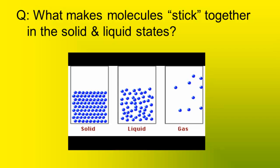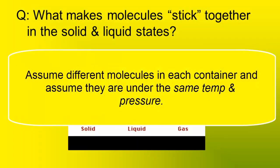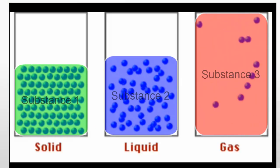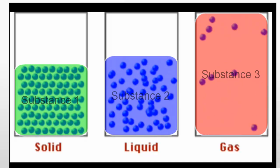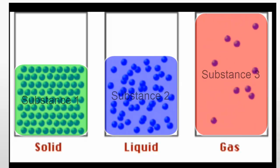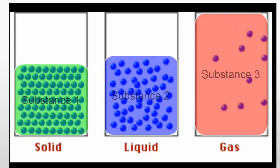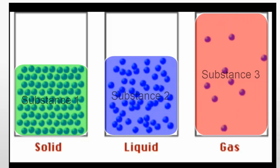In this video I'd like to address this question: what makes molecules stick together in the liquid and solid states? In this animation we can clearly see that molecules, represented by the blue dots, stick pretty closely together in the solid state and the liquid state. The question is, what makes them do that as compared to molecules in the gaseous state, where they're pretty far apart and there's essentially no interaction between them?